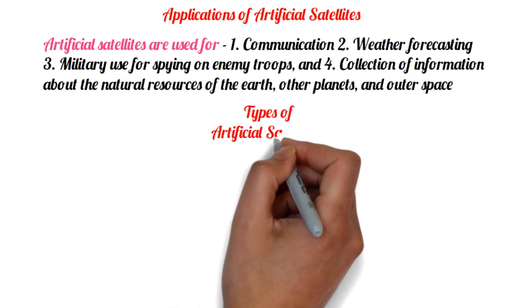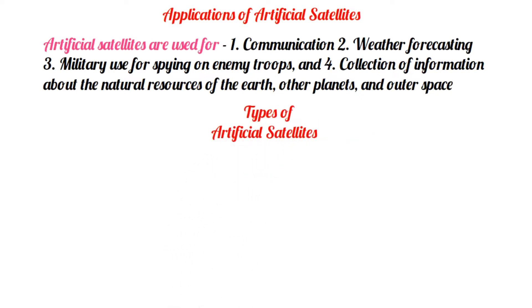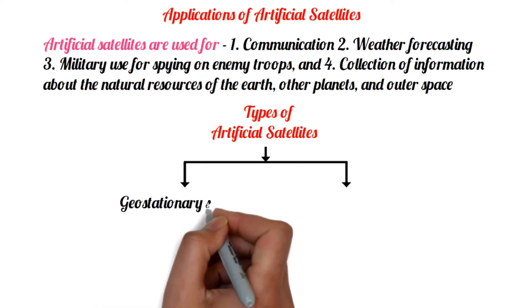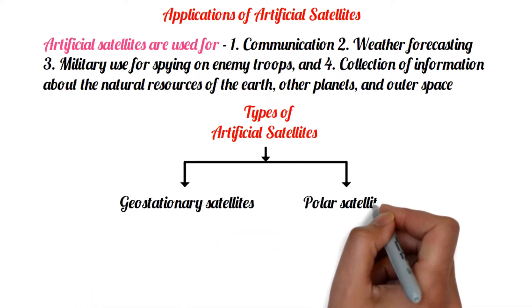Types of artificial satellites. Based on the satellite's direction of motion and distance from Earth's surface, artificial satellites are classified into two categories: geostationary satellites and polar satellites.